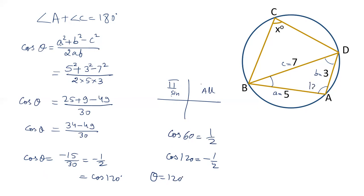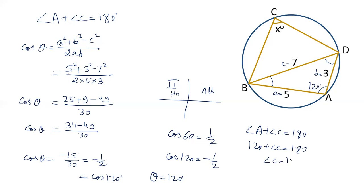So the value of angle A is 120 degrees. Since angle A + angle C = 180 degrees in a cyclic quadrilateral, angle C = 180 − 120, which is 60 degrees. So the value of angle C is 60 degrees.